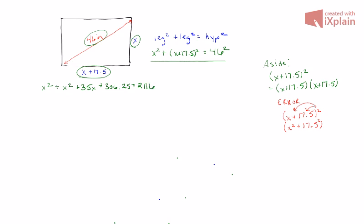From here, what I would suggest doing is you want to subtract 2,116 from both sides. In order to really start to set up this quadratic, you want to go ahead and start isolating everything and get this polynomial or this quadratic equal to zero. Also note that you have like terms over here. You would have 2x squared, so this becomes 2x squared plus 35x minus 1809.75 equals zero.